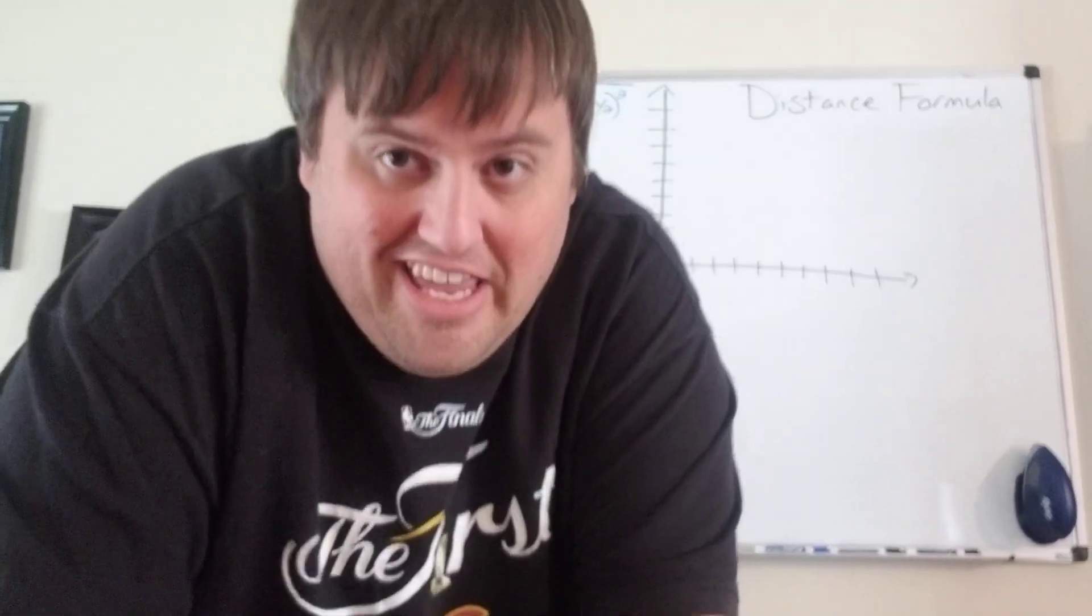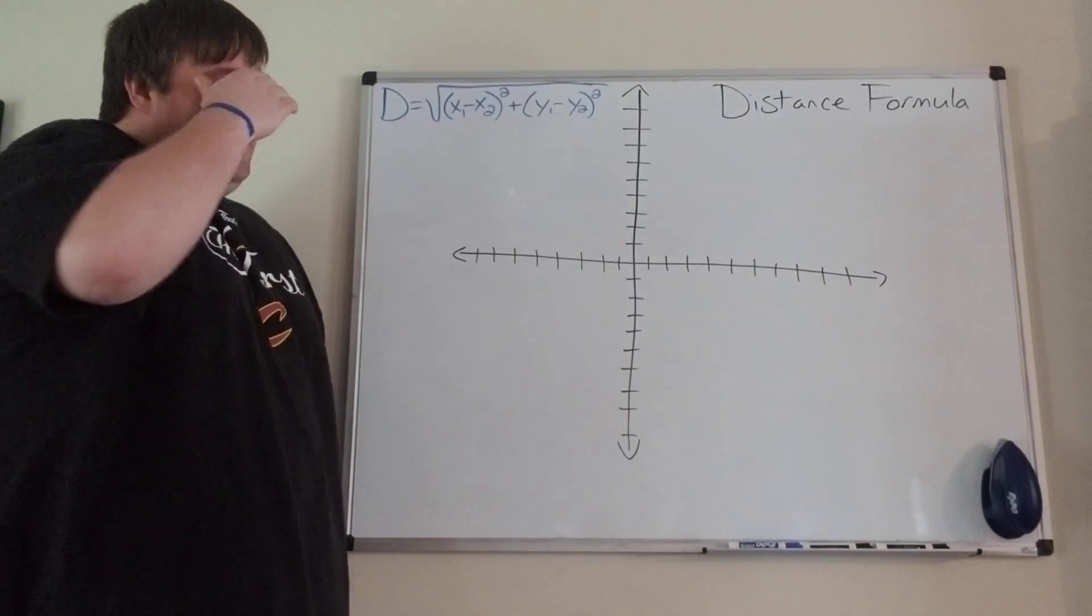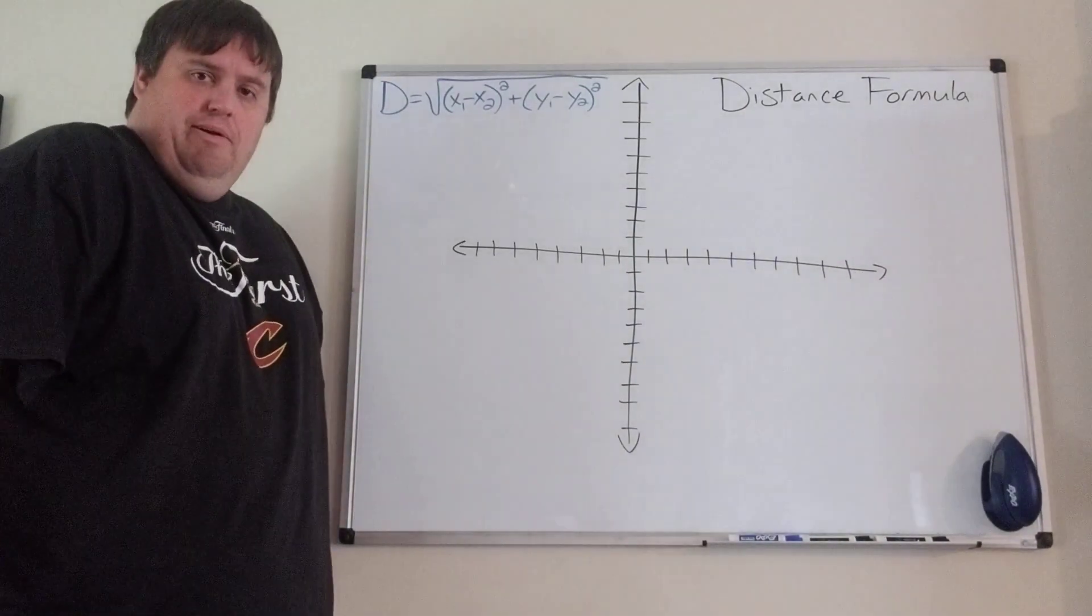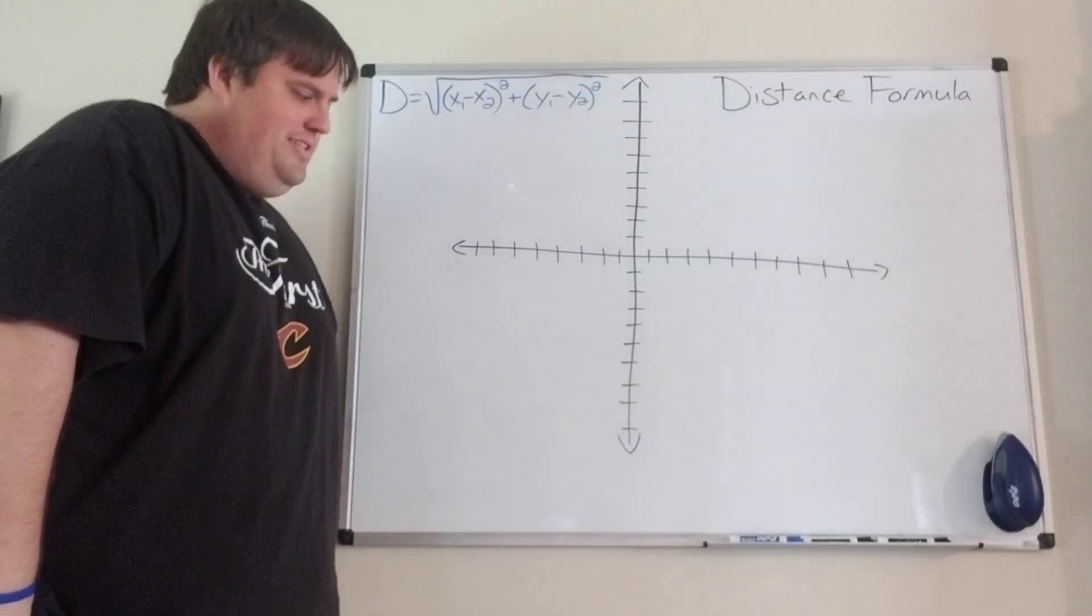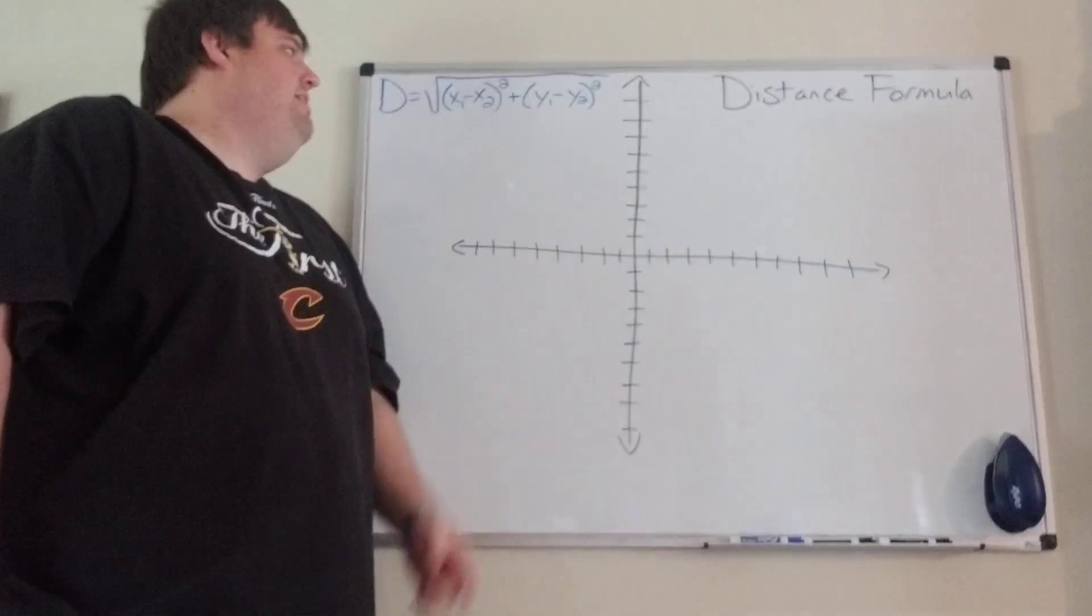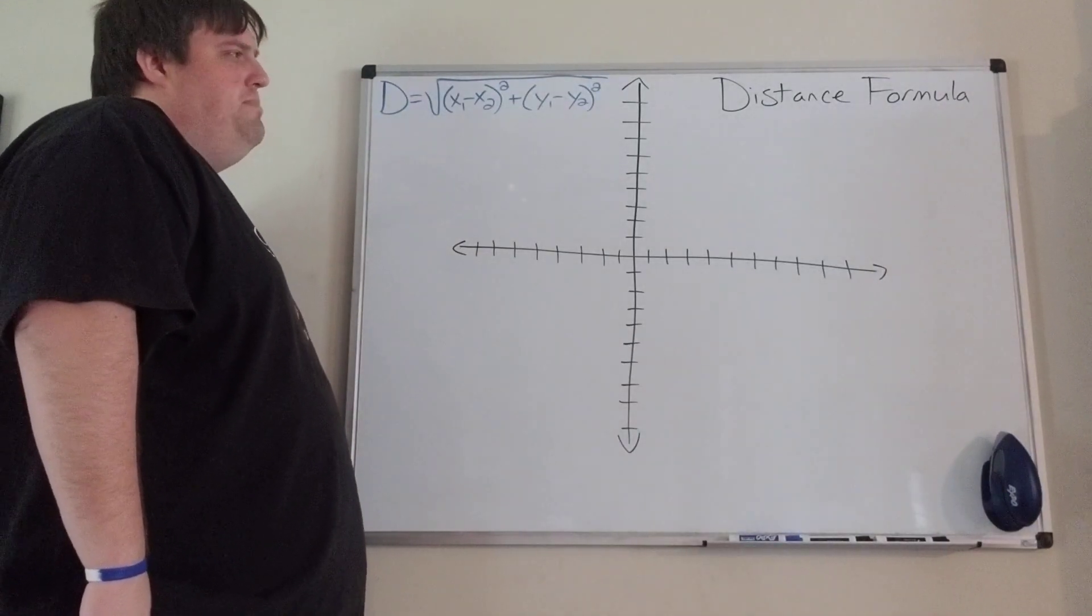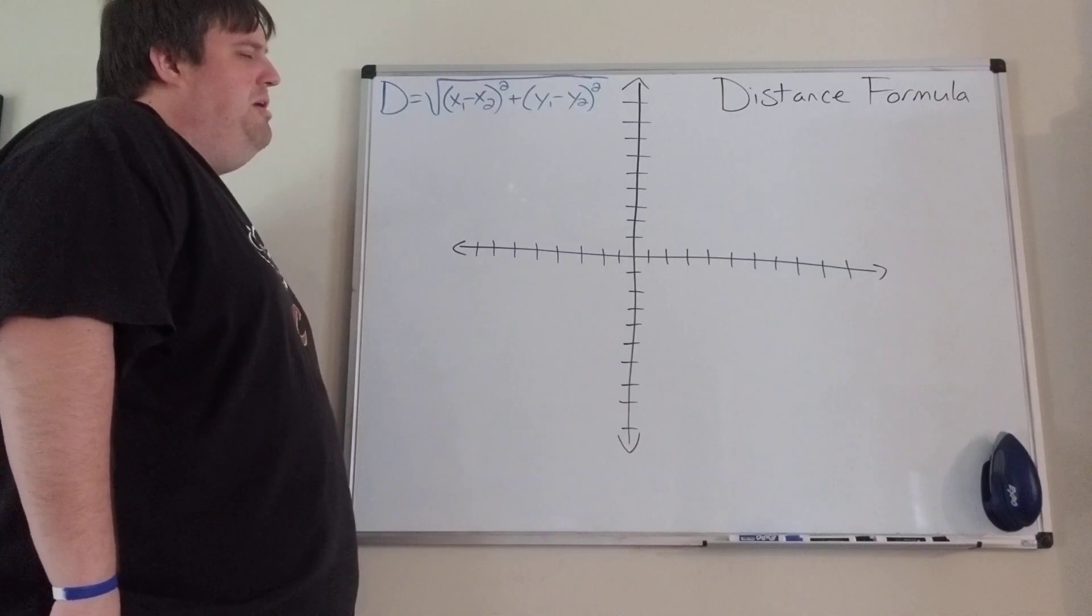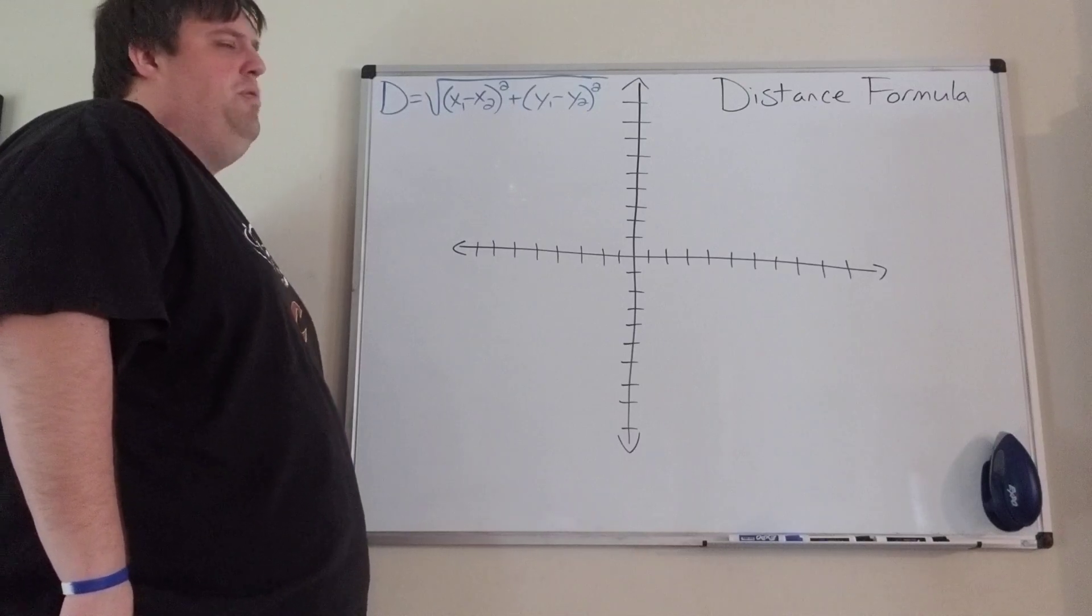Hey everyone, back again for another math lesson. Today we're going to be talking about another application of Pythagorean Theorem, which is the distance formula. The distance formula is this really long thing you can see over here. It says that the distance between two points is going to be the square root of x1 minus x2 squared plus y1 minus y2 squared.